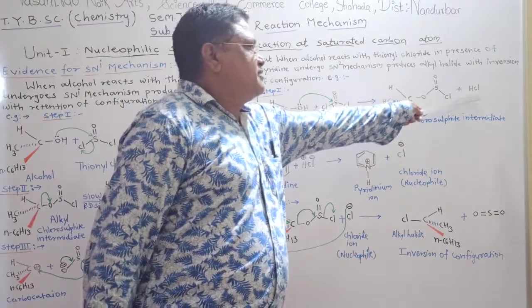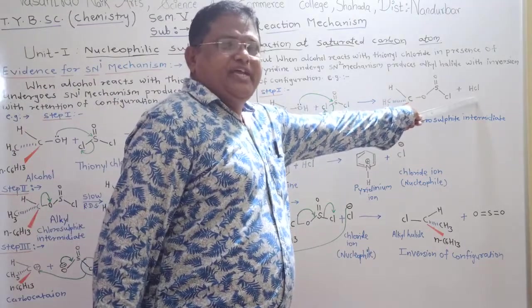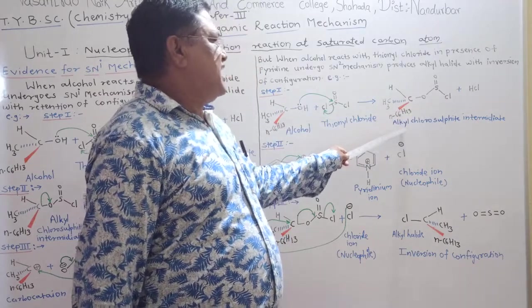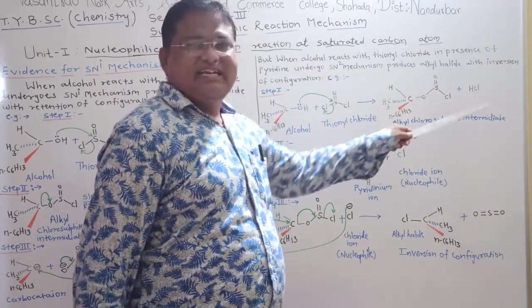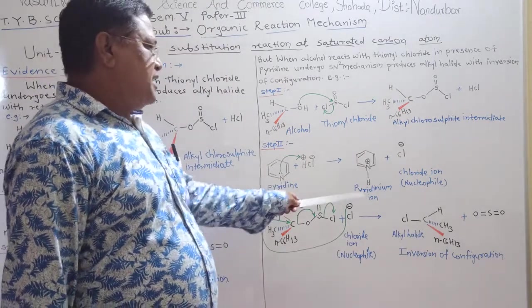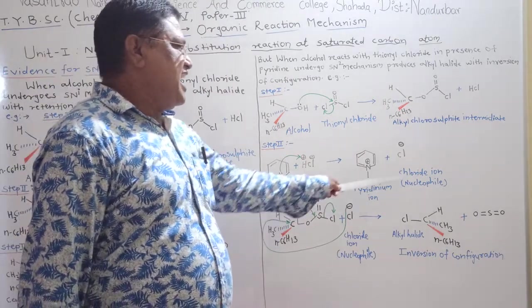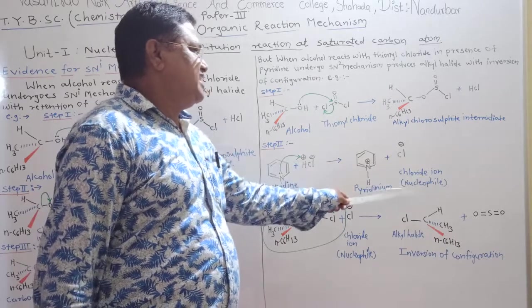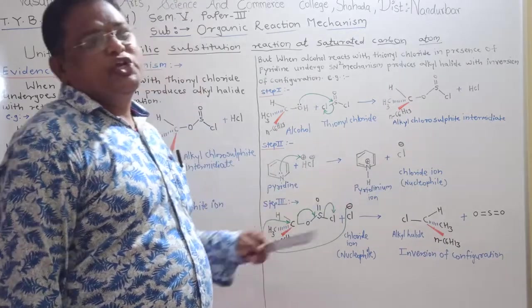In this case, HCl formed during the formation of alkyl chlorosulphite reacts with pyridine to form pyridinium ion and free chloride ion which acts as nucleophile.